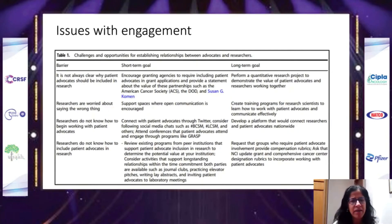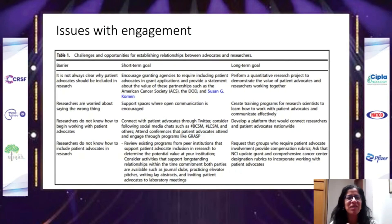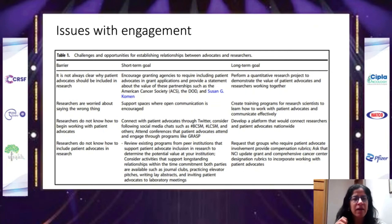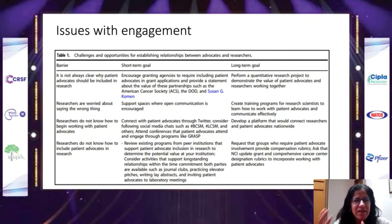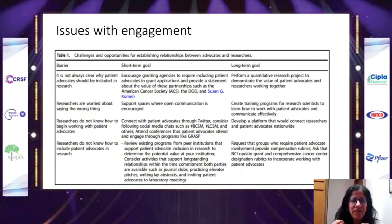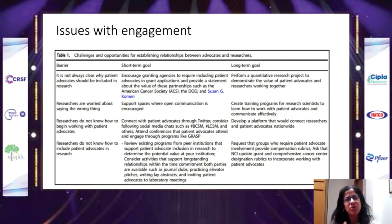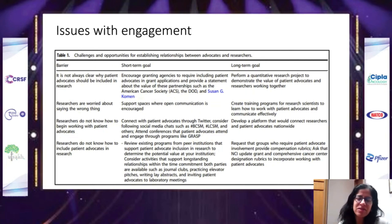There are multiple barriers. Not everyone recognizes that patient advocates should be included in research. We must encourage granting agencies to require patient advocate involvement in planning. In the long term, there should be projects demonstrating the value of patient advocates. Researchers are also worried about saying the wrong thing when discussing delicate trial topics, so there should be safe places to communicate, and training programs. Researchers often don't know how to begin working with advocates — these barriers exist in both the short term and the long term.